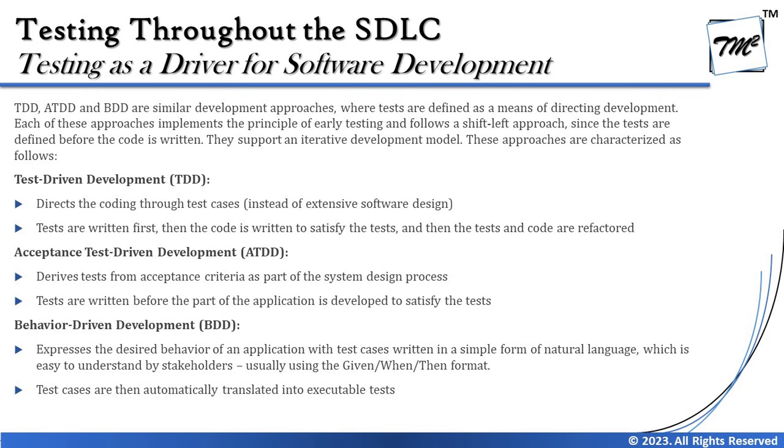The shift-left approach is about shifting testing to the left-hand side on the life cycle. As we all know, testing happens later in the life cycle, which is on the right-hand side, and shift-left moves it before what used to happen prior. Development is an activity that happens prior to test execution, but now test cases are written before development can even kick off. This caters to the needs of agile methodology, where tests are defined before the code is written, supporting an iterative development model.